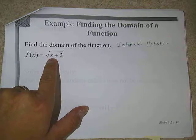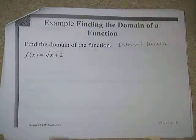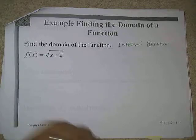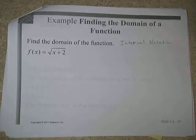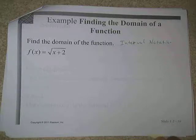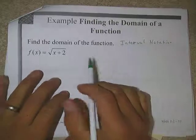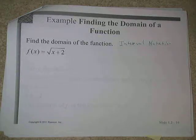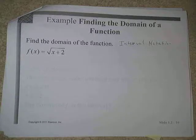What x values are okay to go into this function? If I put a 2 in, I'd get radical 4, which is 2 — that's fine. I could put a 7 in and get 9 under the radical, so the point (7, 3) would be on this curve. But if I tried to put a negative 6 in, that's not okay — it produces a negative under the radical, which gives us something imaginary.